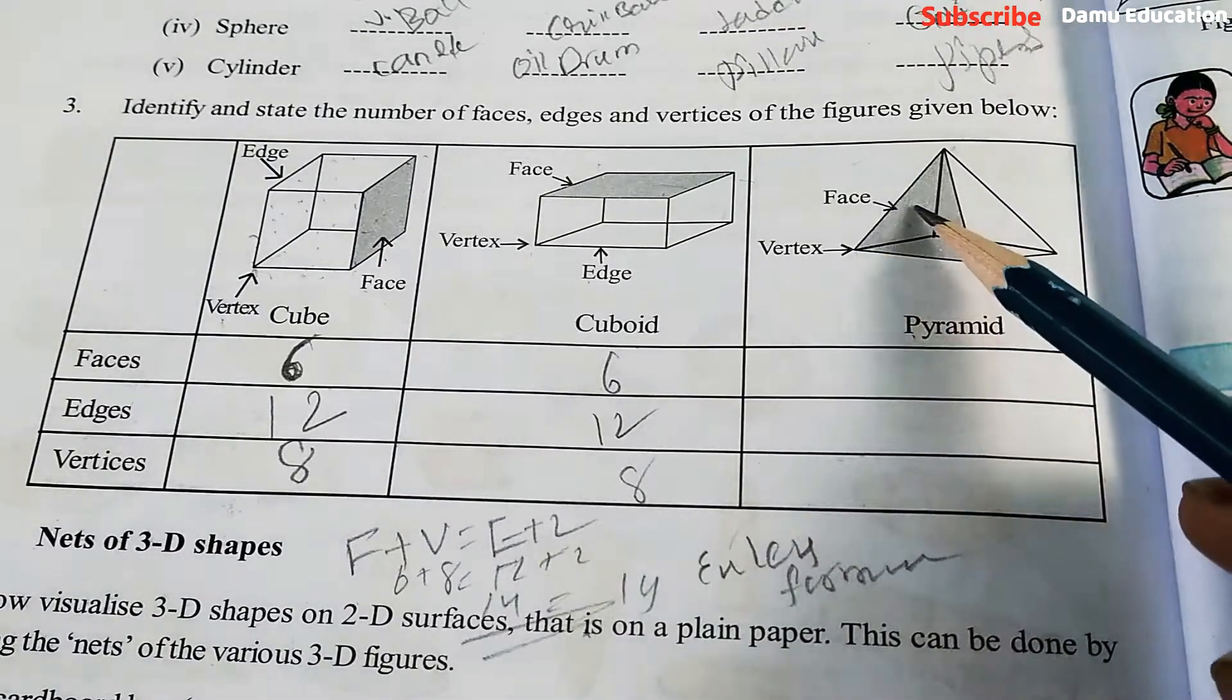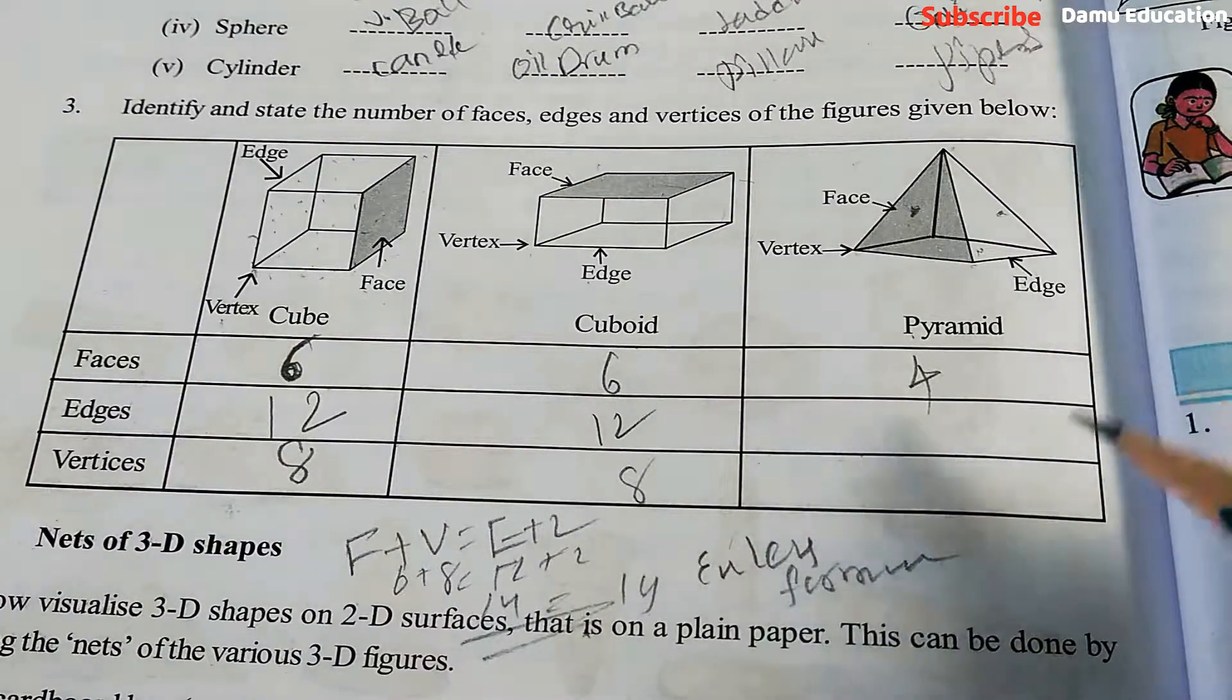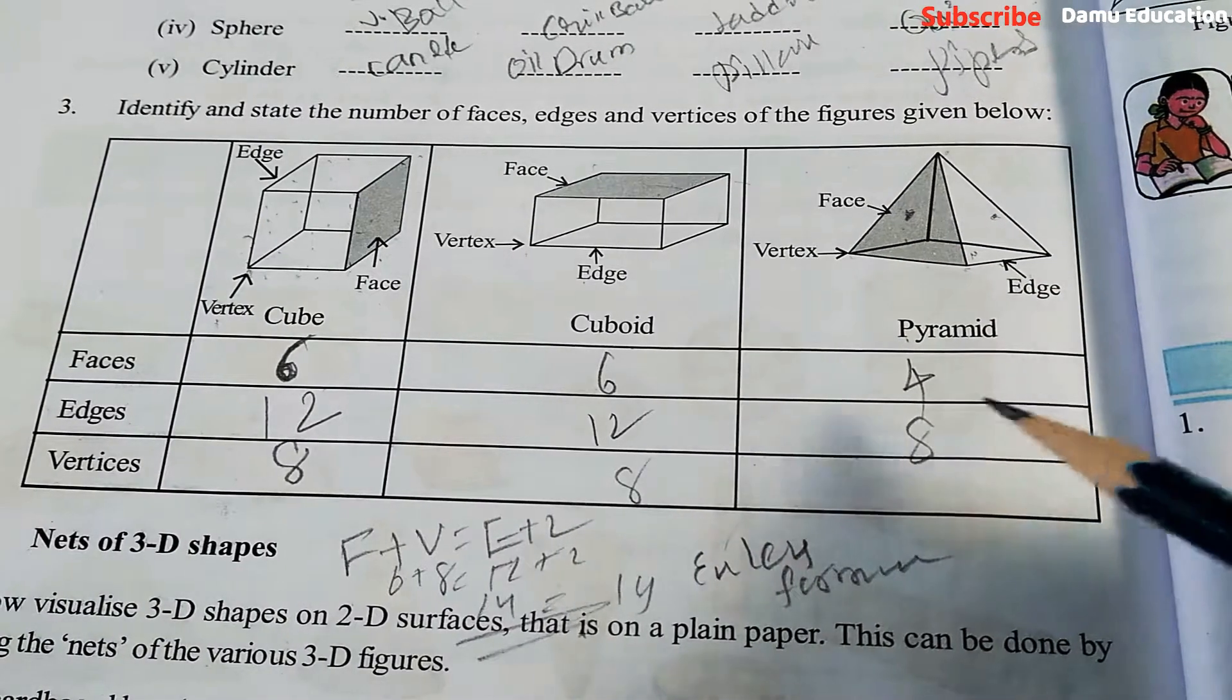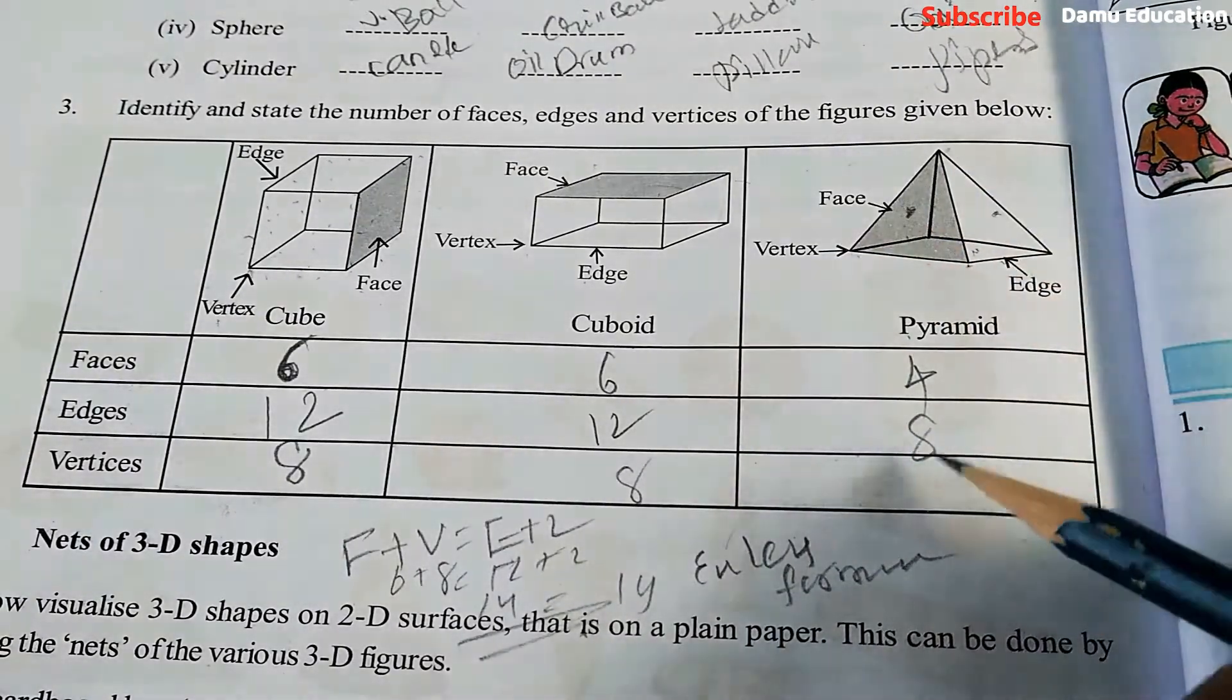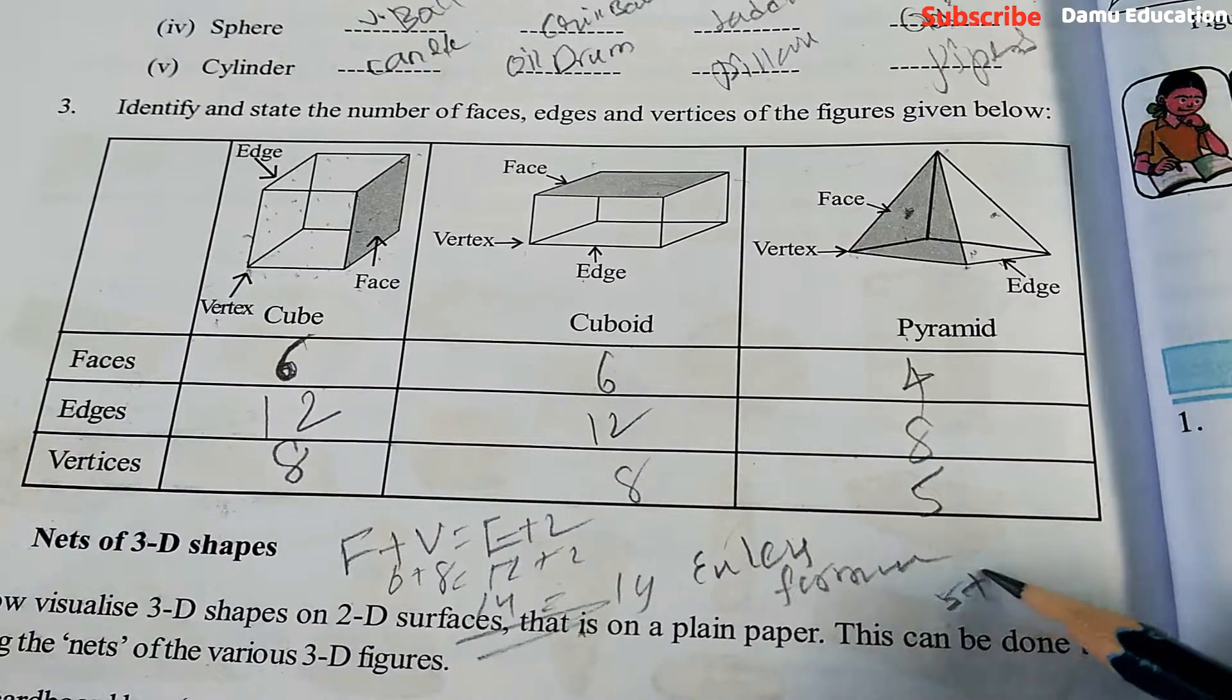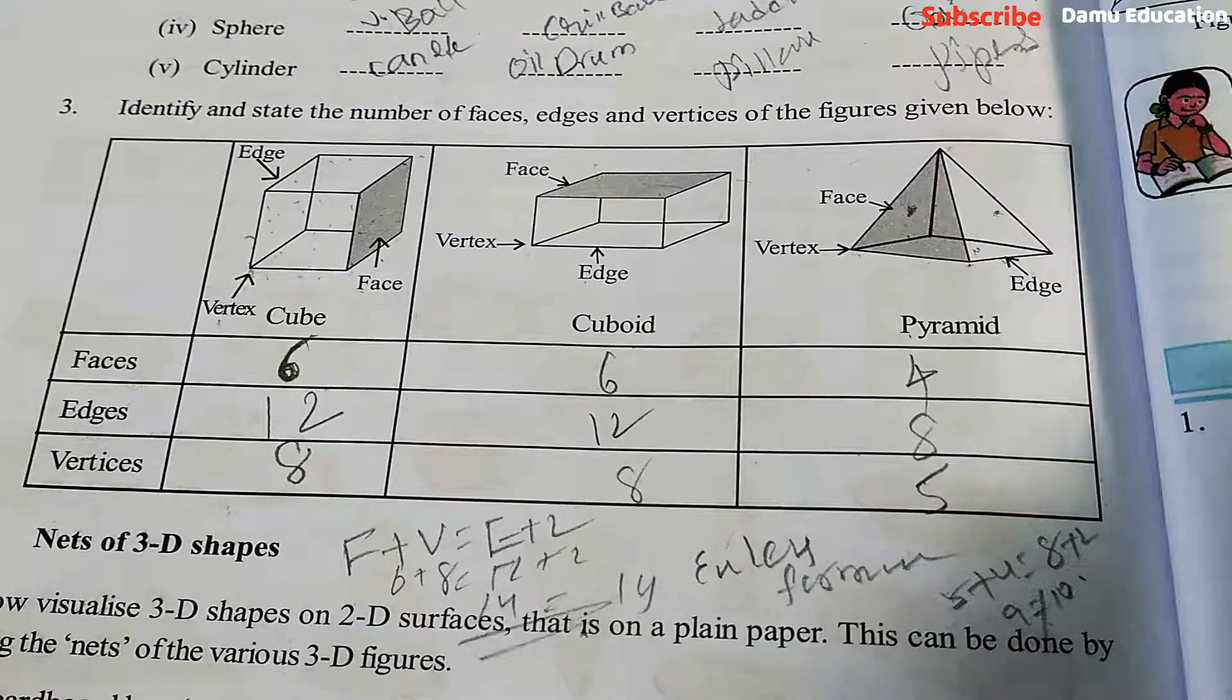Then pyramid. Number of faces: one base, one upper inside, one, two, three, four - four faces. Next edges: how many? Down: one, two, three, four - four edges. Upper: one, two, three, four - eight edges. Then vertices: how many? One, two, three, four, five. Is the formula applicable? Five faces plus four vertices equals eight edges plus two. So nine equals ten - not applicable.